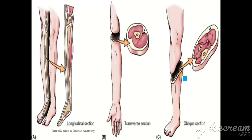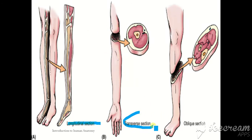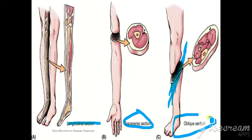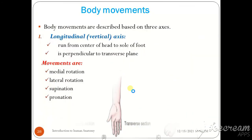For sections: when the body is divided into left and right, we call that a longitudinal section. When divided into superior and inferior, we call it a transverse section. When divided at an angle, we call it an oblique section. So those are the main body sections.